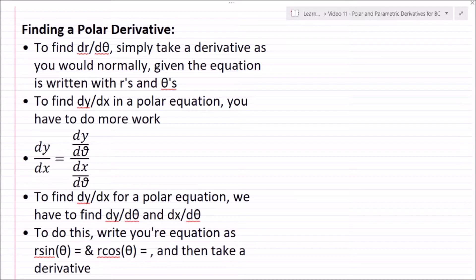All right, so now let's talk about finding a polar derivative. So to find dr/dθ, simply take a derivative as you normally would, given the equation's written with r's and thetas. So let's say we have r equals 3 sin(θ). Dr/dθ is just going to be a derivative here. So 3 cos(θ). Now note that this is not equal to dy/dx. What this is saying is, what is the rate of change of my radius as my angle changes? So it's talking about distance to the origin. But we don't want that, we want the slope, dy/dx. So how would we find that?